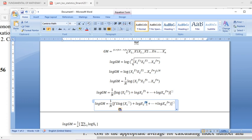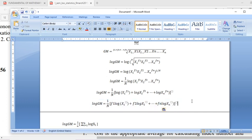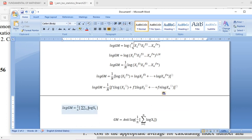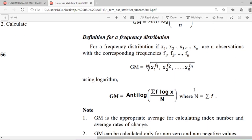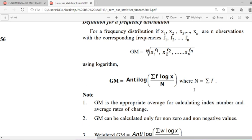We can simplify it one more step. We can use log a raise to x equal to x into log a. So what will be the result? We can see that log GM is equal to antilog of 1 by N into summation i from 1 to n fi log xi.